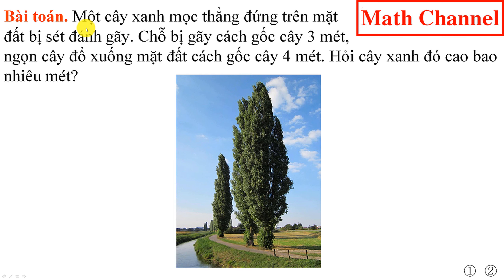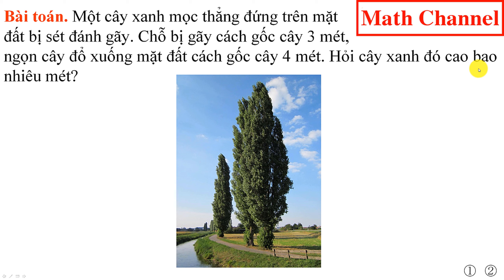Bài toán: Một cây xanh mọc thẳng đứng trên mặt đất bị xét đánh gãy. Chỗ bị gãy cách gốc cây 3m. Ngọn cây đổ xuống mặt đất cách gốc cây 4m. Hỏi cây xanh đó cao bao nhiêu mét?